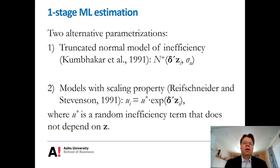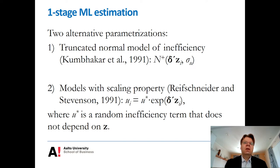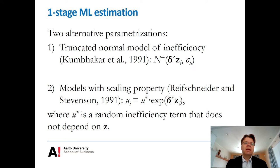Another stream of literature, going back to Reifschneider and Stevenson's paper, models the Z variables as a kind of rescaling of the inefficiency distribution. Think of u-star as a random inefficiency term with some given probability distribution; the Z variables introduce additional rescaling of this base distribution. In that sense, the Z variables can influence both the expected value and the variance of the inefficiency term.